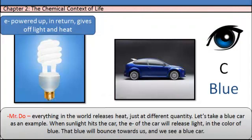Everything in the world releases heat, just at different quantities. Let's take a blue car for example. When sunlight hits the car, the electrons of the car will release light in the color blue. That blue will bounce towards us, and we see a blue car.